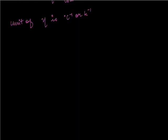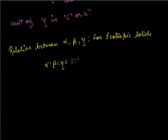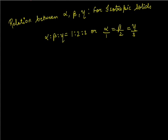From here I can write a relation between alpha, beta, and gamma, which is for isotropic solids. The relation is alpha is to beta is to gamma equals 1 is to 2 is to 3. Or I can write alpha upon 1 equals beta upon 2 equals gamma upon 3. Here we finish with the three thermal expansions.